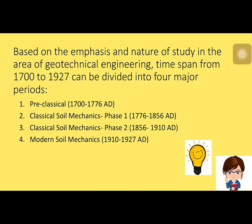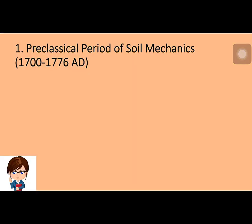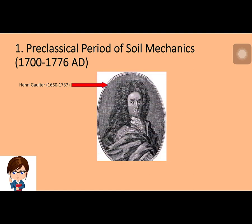The pre-classical period of soil mechanics from 1700 to 1776 concentrates on studies relating to natural slopes and unit weight of various types of soils, as well as semi-empirical earth pressure theories. Henry Gautier, a French royal engineer, in 1717 studied the natural slopes of soils when tipped in a heap, for formulating the design procedure for retaining walls.